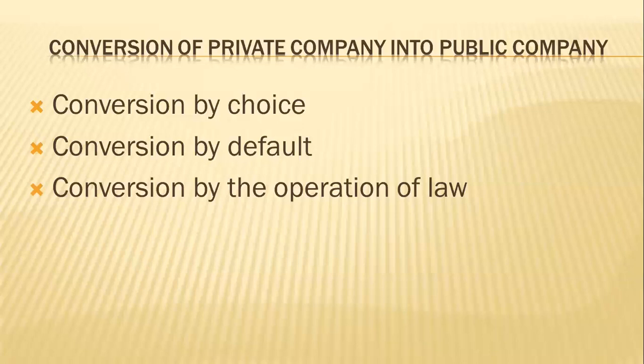Point two — conversion by default: a private company is entitled to certain privileges and exemptions, which it can enjoy as long as it complies with the requirements of its definition as given in Section 3(1)(iii). Where any default is made in complying with those provisions, the company loses the privileges and exemptions, and the provisions of the act apply to the company as if it were not a private company. However, the company may be relieved of the consequences on an application made to the court.